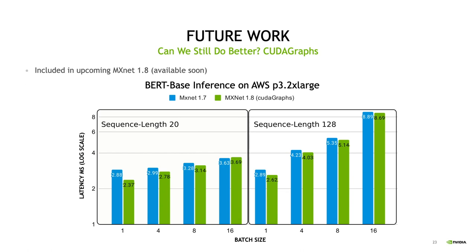Here I am showing preliminary results using CUDAGraph in BERT-base inference on a P3.2xlarge instance with a V100 GPU. On the left, using sequence length 20, we achieve up to 20% improvement in latency. On the right, the same experiment but for sequence length 128, we achieve up to 10% improvement. As the batch size increases, CUDAGraph becomes less significant, so this is most impactful for small batch sizes.